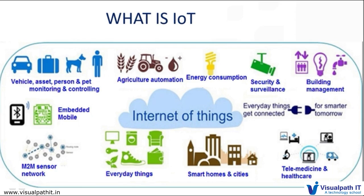So what is Internet of Things? Internet of Things is a system of interrelated computing devices, mechanical, digital machines, objects, animals, or people that are provided with some unique identifiers and ability to transfer data over a network without requiring any human-to-human or human-to-computer interactions.